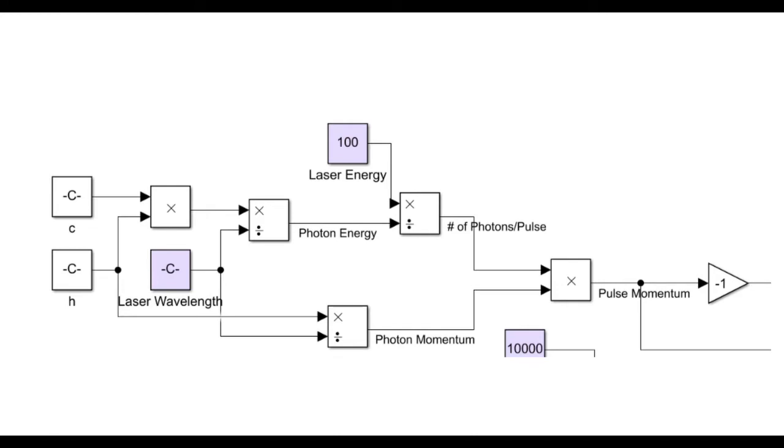The first part of the model finds the momentum of a single laser pulse, which is broken down into finding a number of photons per pulse and the photon momentum. We start by finding the photon energy, which is found by multiplying Planck's constant by the speed of light and dividing that by the laser wavelength. Then, to find the photon momentum, you just take Planck's constant and divide that by the laser wavelength. To find the number of photons per pulse, we multiply the photon energy by the laser energy. Then, we can multiply the number of photons per pulse and the photon momentum to find the total pulse momentum.